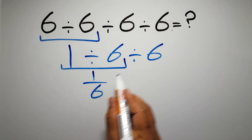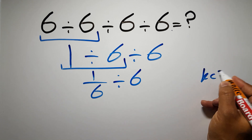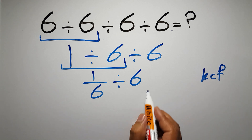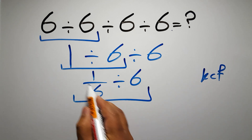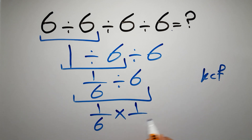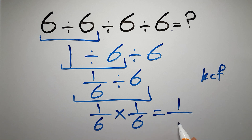Now we have to do this division: 1 divided by 6 can be written as 1 over 6, so 1 over 6 divided by 6. According to the KCF rule — K stands for Keep, C stands for Change, and F stands for Flip — we keep the first fraction, change division to multiplication, and flip the second fraction. So we have 1 over 6 times 1 over 6, which equals 1 times 1 over 6 times 6, which equals 1 over 36. This is our final answer.